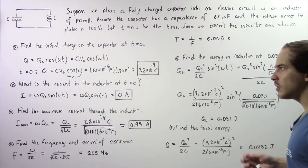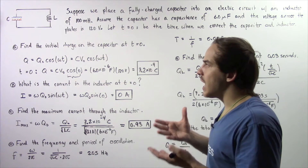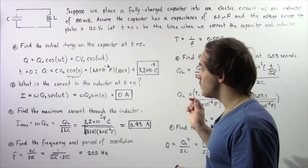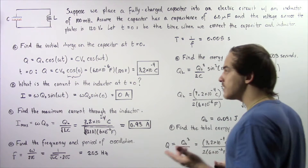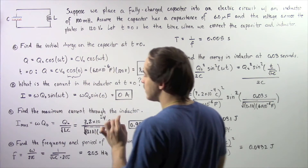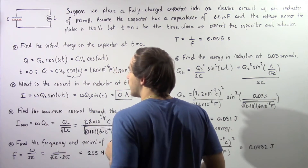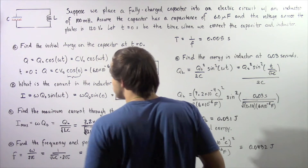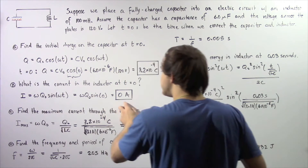Part B asks for the electric current flowing through the inductor at a time of 0 seconds. Initially, all the charge is stored on the capacitor, which means no electrons flow within the circuit. So at t equals 0 seconds, there is no electric current inside the inductor. We can verify this using the equation for current: I equals angular frequency times Q0 times sine of omega times T. When T is 0, sine of 0 equals 0, so I equals 0 amps. This checks out.